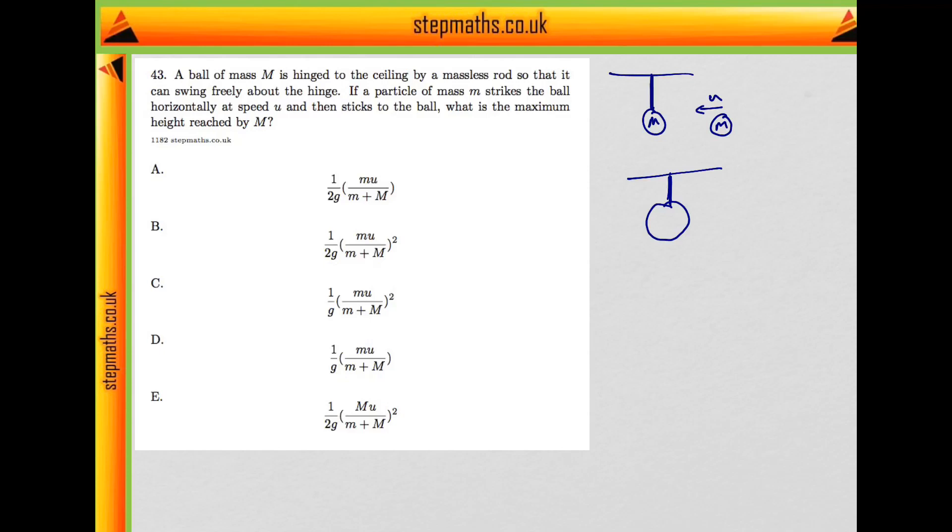So we're going to have another particle of mass m plus little m, and that's going to have some speed v. That's going to swing upwards like this to some height, and the difference in height there is going to be the maximum height reached. Now, we need to find that.